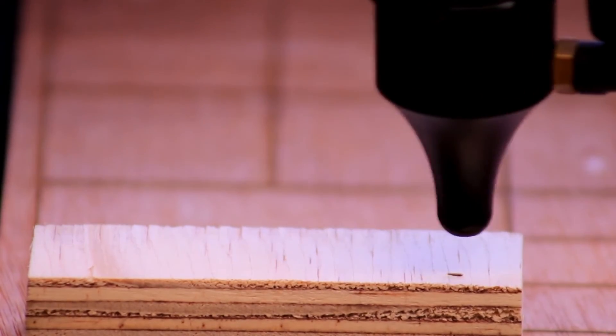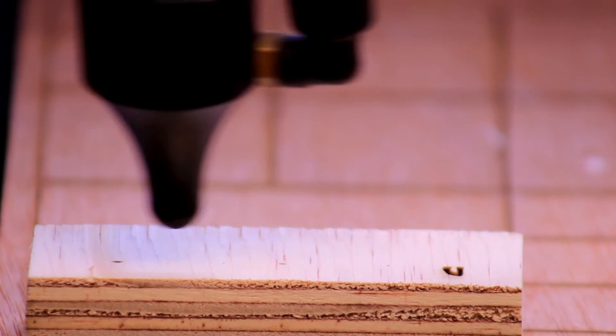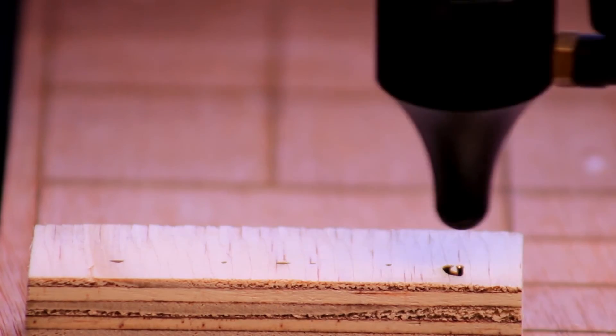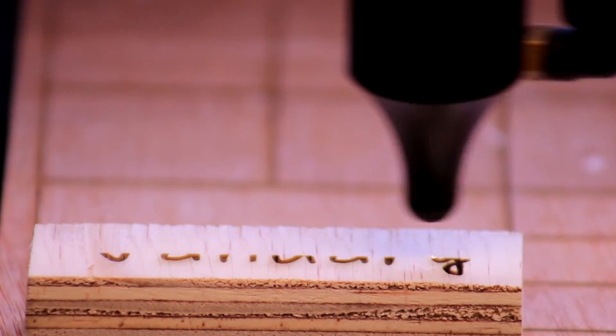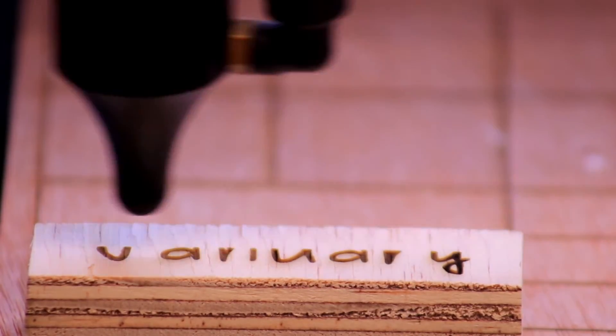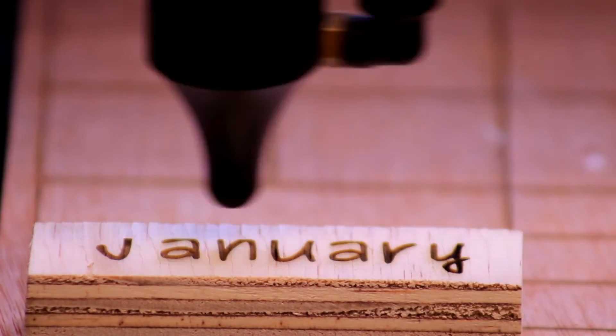Finally, I head over to the laser cutter to start engraving all the days of the week, months, and also the dates. The dates work out that you need two ones, two twos, and then three, four, five, six, seven, eight. I use the six that I can use as a nine as well.